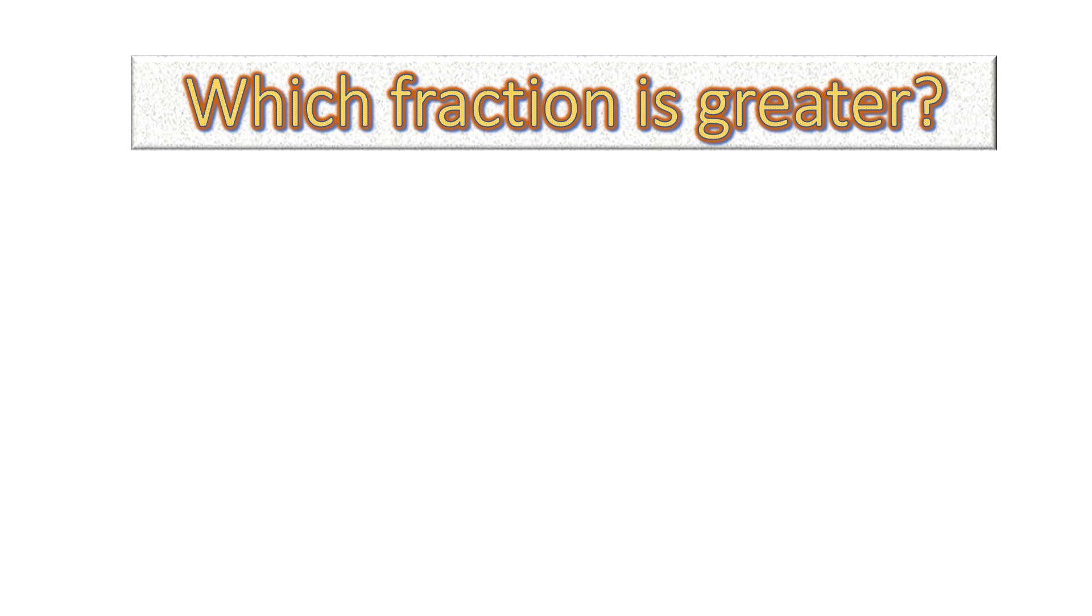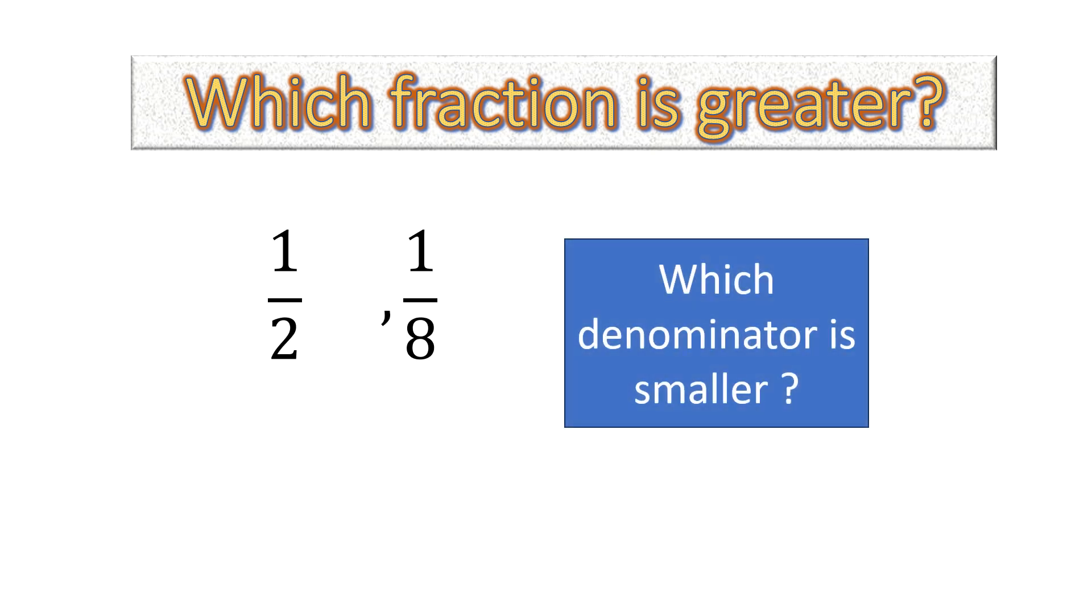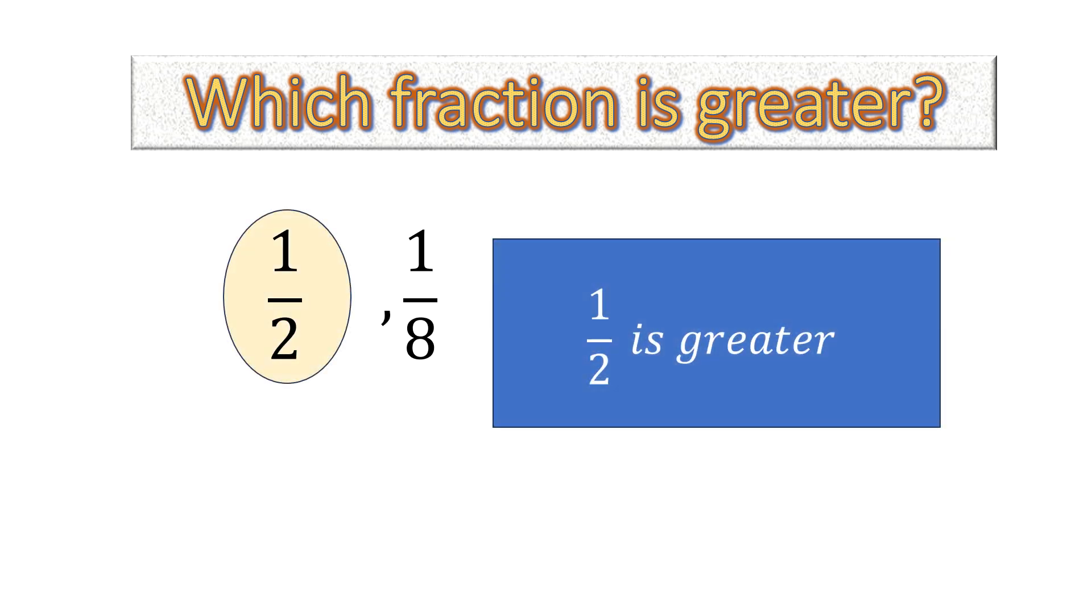But what if we want to do it in a very short way? We have the same fractions, 1 over 2 and 1 over 8. Now tell me which denominator is smaller? 2 is smaller, right? So if the denominator 2 is smaller for a unit fraction, the fraction 1 over 2 will be the greater fraction. It's the shortcut.